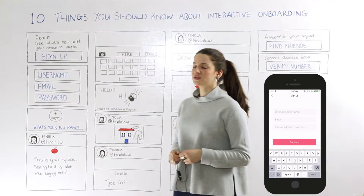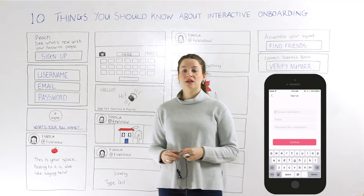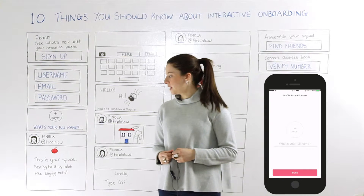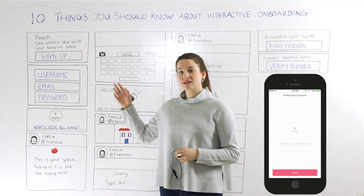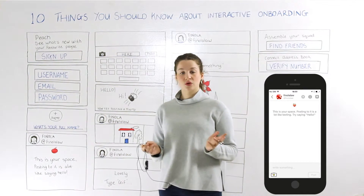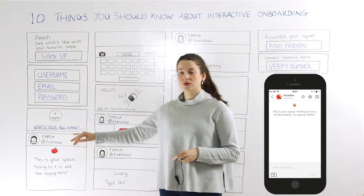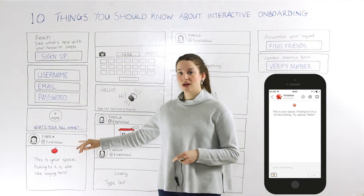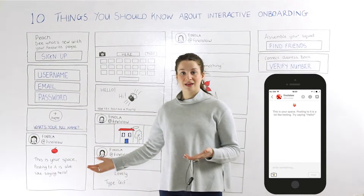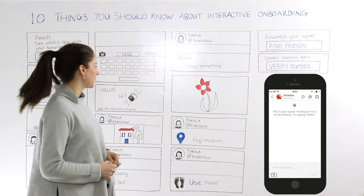You can input a username, email and password, and then upload a photo and input your name. When you have these steps complete you're brought into what's called your space. You can see that they've used the photo you input and the username you created, so you have an account set up and ready to go.